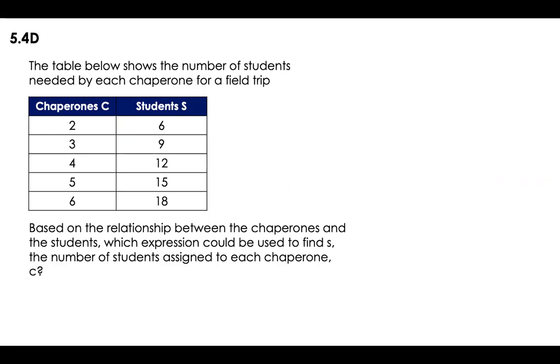The table below shows the number of students needed by each chaperone for a field trip. You have two chaperones, six students, three chaperones, nine students, and so on. Based on the relationship between the chaperones and the students, which expressions could be used to find s, the number of students assigned to each chaperone?